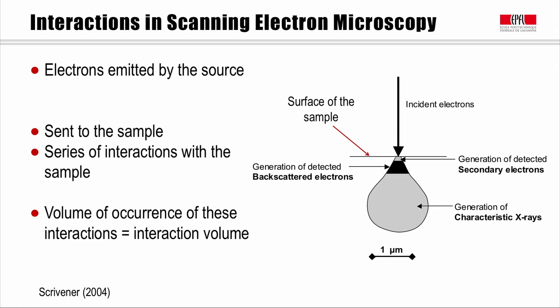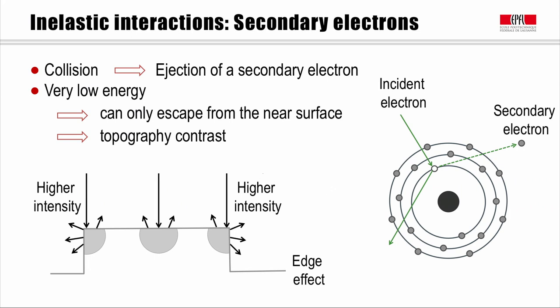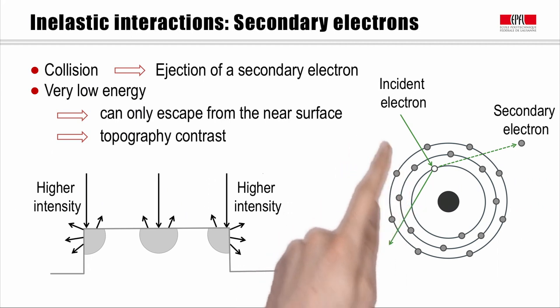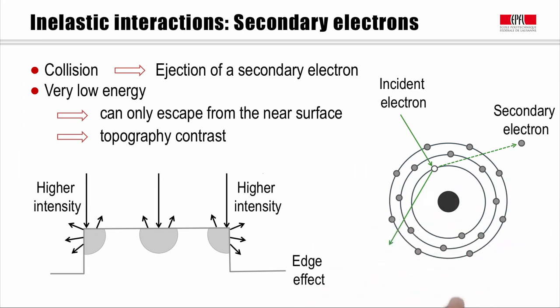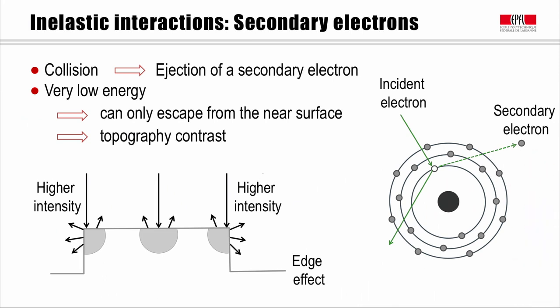These interactions can be either elastic, with no energy loss, or inelastic. The first kind of interaction occurs when an incident electron collides with an electron of an atom of the sample. From this collision, the incident electron is deviated and the bound electron is ejected. This ejected electron is called a secondary electron, or SE. The energy of secondary electrons is typically lower than 50 eV, which is very small. Thus, if these electrons are to be collected by the detector, they have to be formed very close to the sample surface. If they are formed deeper in the sample, they would face interactions before reaching the surface and would be absorbed due to their low energy, and would not be collected by the secondary electron detector.